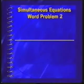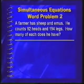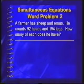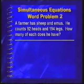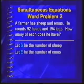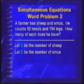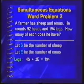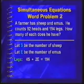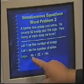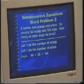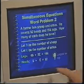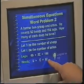Example 2. Here we've got a farmer who has sheep and emus. He counts 92 heads and 194 legs. How many of each does he have? Let S be the number of sheep and E be the number of emus. A sheep has 4 legs and an emu has 2, so 4S plus 2E equals 194. And then S plus E equals 92 for the heads.